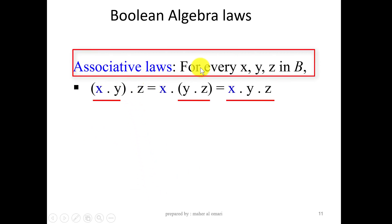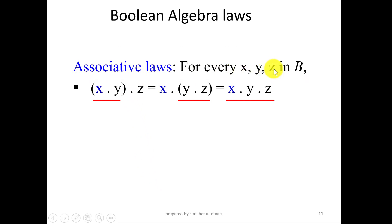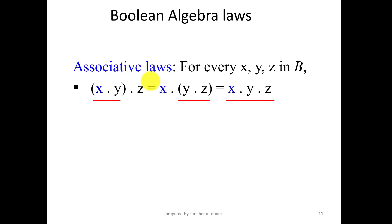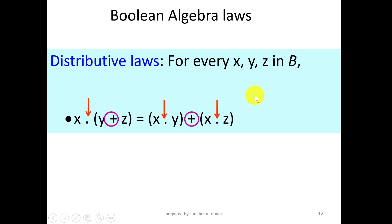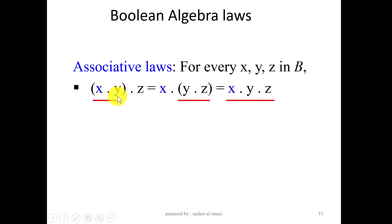The associative law for AND: for every X, Y, and Z in B, (X AND Y) AND Z is the same as X AND (Y AND Z), which is the same as X AND Y AND Z. Taking two inputs into an AND gate and ANDing the result with Z is the same as having a three-input AND gate.